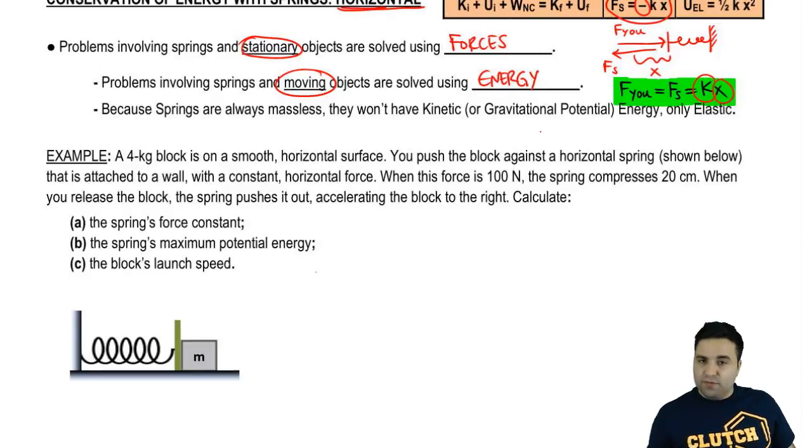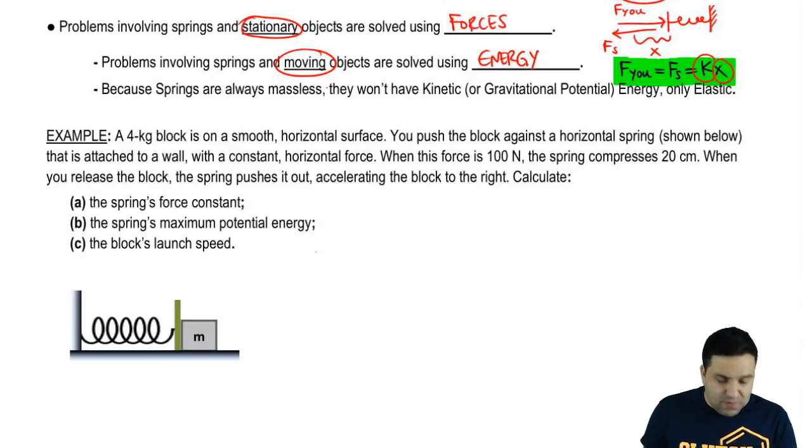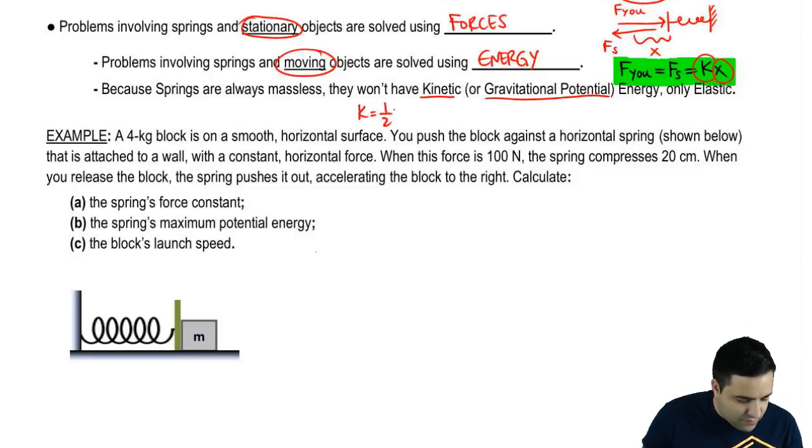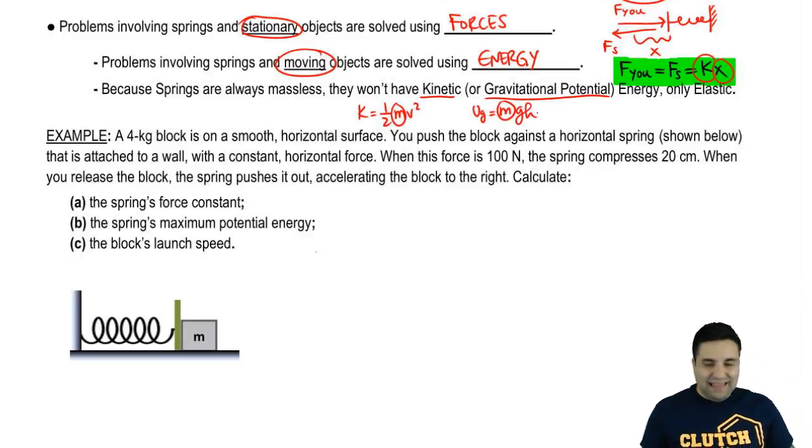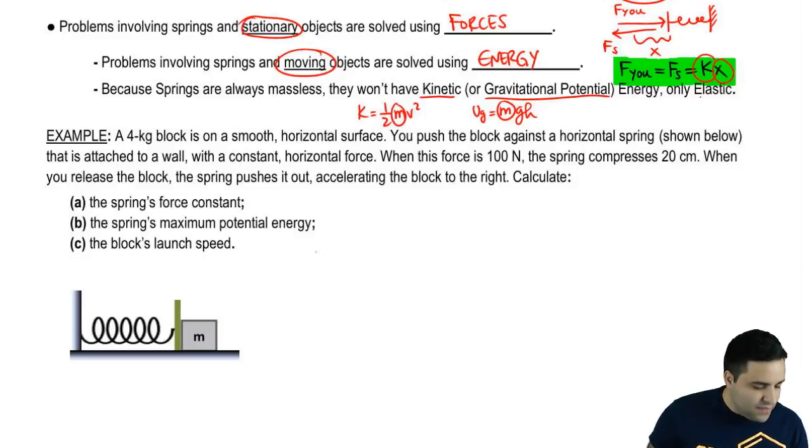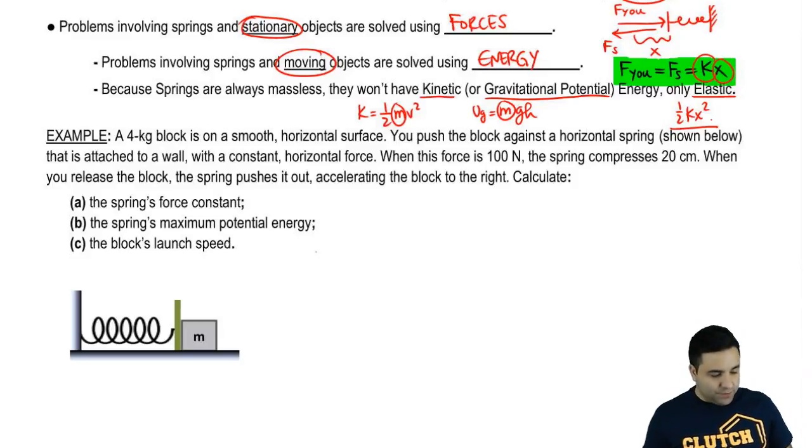And then the last point that I want to mention here before we do an example is that springs are always going to be massless. At least in basic physics, springs will be considered massless to make things simpler. And because of that, they won't have kinetic energy or gravitational potential energy. And you can look at the equation and see this right away. Kinetic energy requires a mass. Springs are massless. Potential energy, gravitational potential energy requires a mass, but springs will be light and therefore considered massless. Elastic energy is half kx squared, so springs will only have elastic energy. So the only time we're going to have kinetic energy or gravitational potential energy is if there's a block which has a mass that is touching the spring.